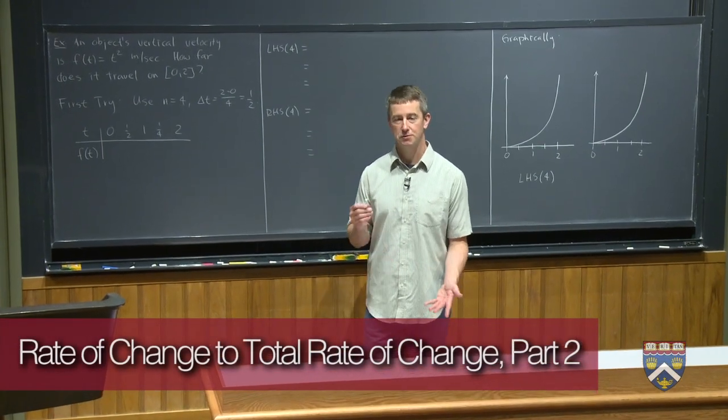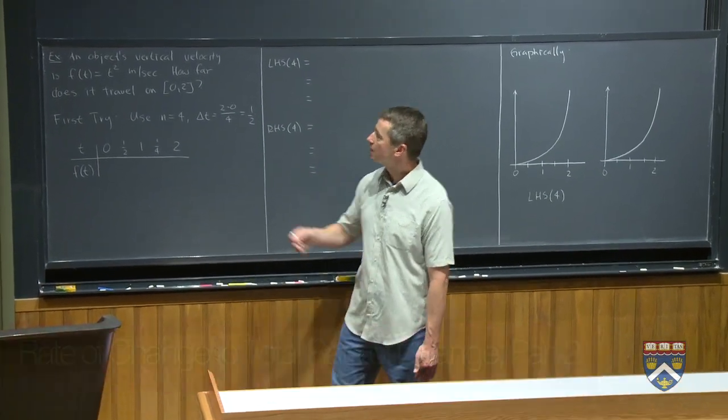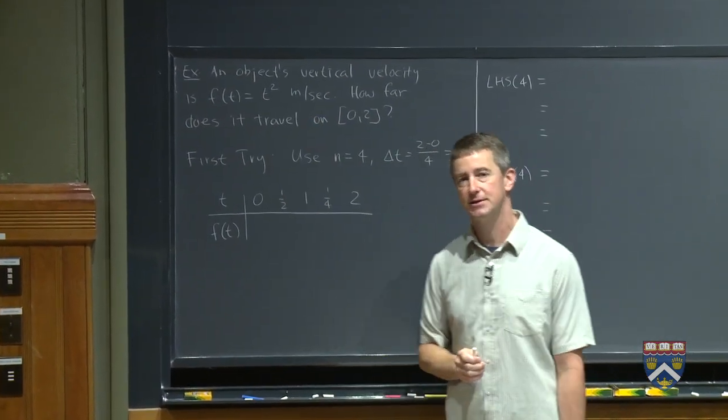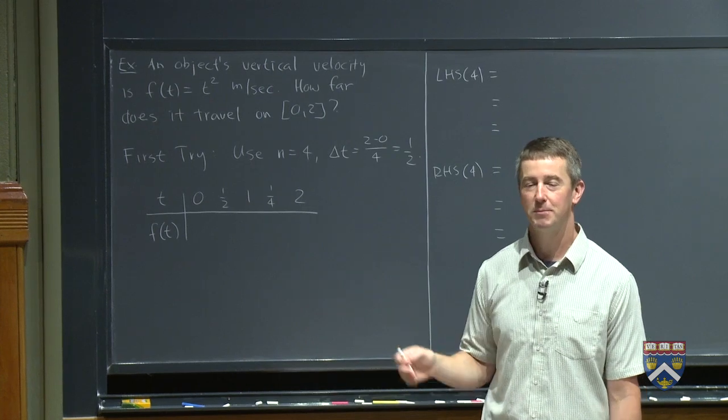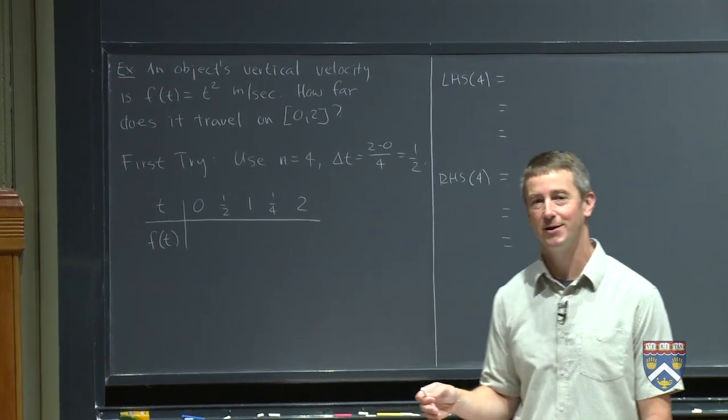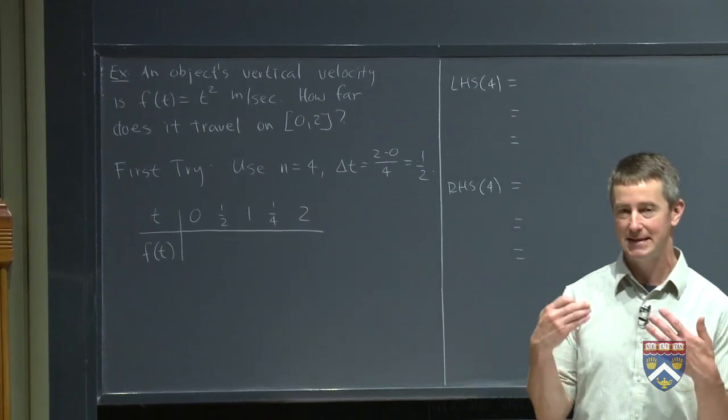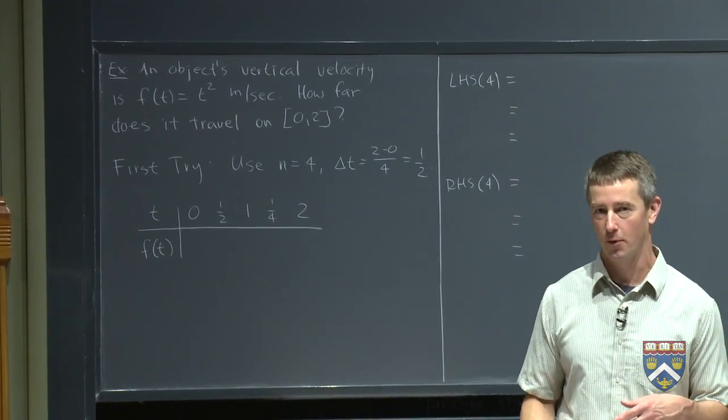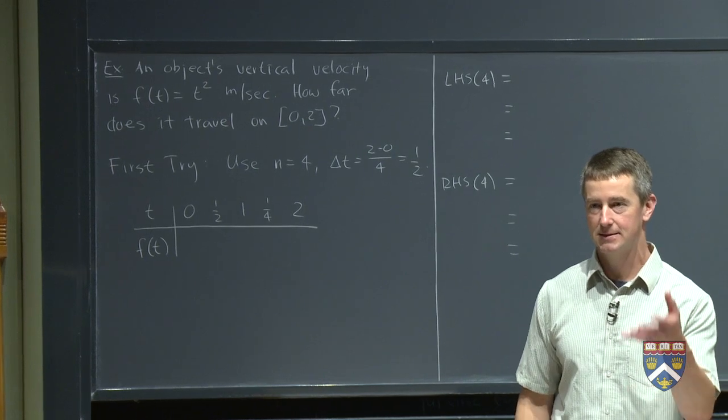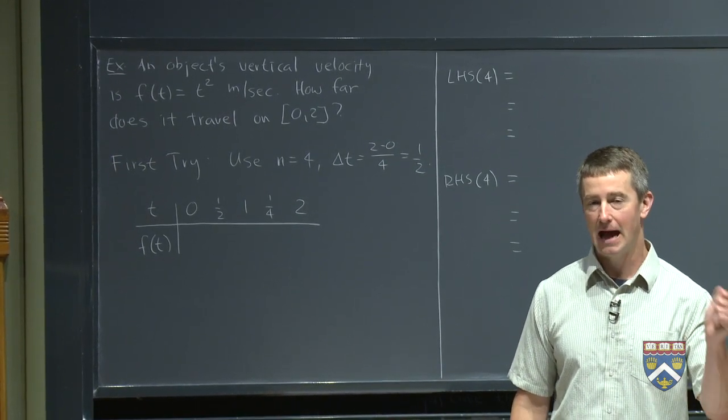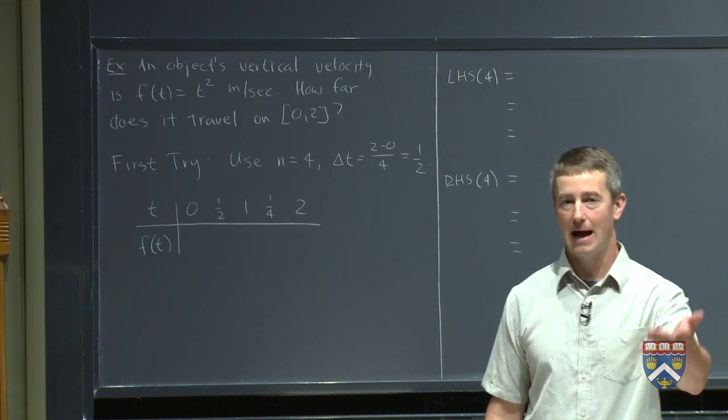Now we'd like to try an example where we have an actual formula for the function. So in this case, let's suppose that an object's vertical velocity is f of t equals t squared meters per second. So maybe this is a hummingbird like we talked about in an earlier example way back. How far does it travel on the interval from 0 to 2? So again, this is the opposite, the inverse problem of what we were doing before. There we were given the object's position, we wanted to find out how fast it was going, its rate of change. Now we're given the rate of change and we want to figure out how far it traveled.